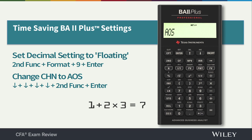Level 1 candidates, go for this right now — try it out, and once you start with it you'll love it. Level 2 and Level 3 candidates, maybe you've already been using the chain setting and you're familiar with it, but at least give it a try. Who says you can't teach a dog a new trick? To exit this screen, press Second Function Quit, which always takes you back to the main input screen. Now our calculator is set up with a floating decimal and the AOS preferred optimal setting for the CFA program.